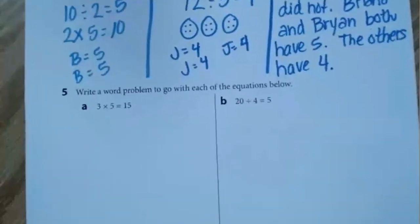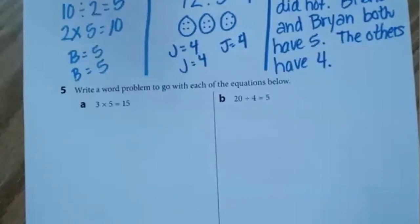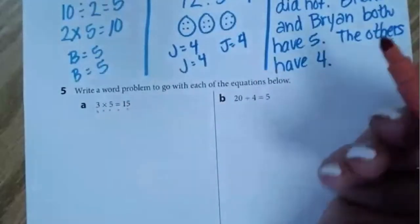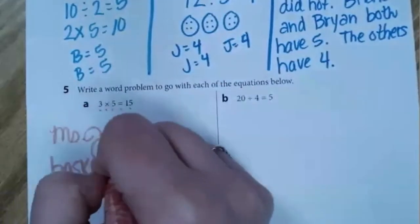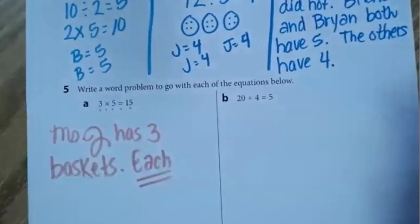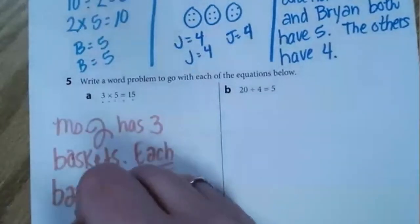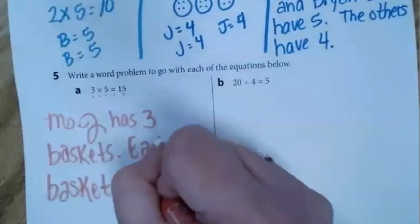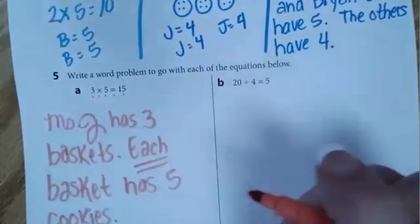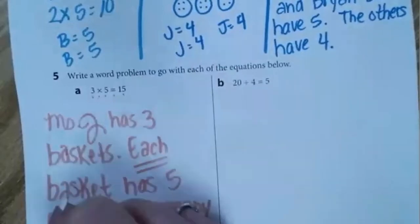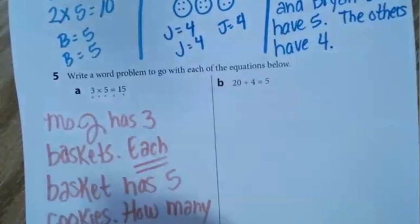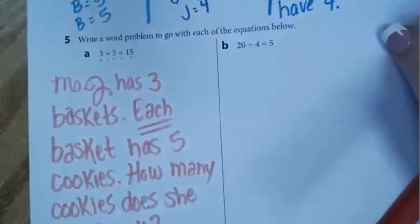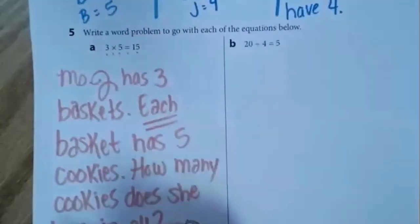Now for number five and six, you have to write a word problem to go with these equations. We'll do one together and you're going to do one on your own. When we use food, math makes sense. Three times five is 15. Miss Gerald has three baskets — each, meaning we're going to use equal groups — each basket has five cookies, and the question is: how many cookies does she have in all?